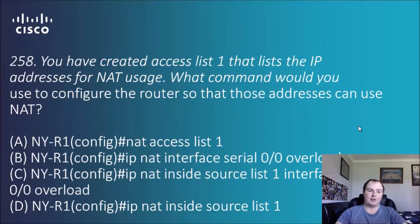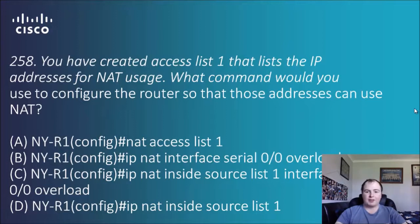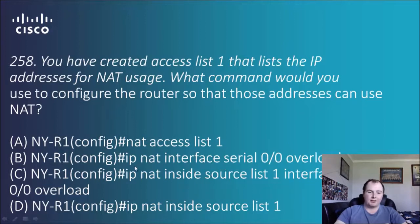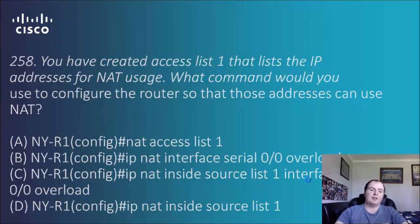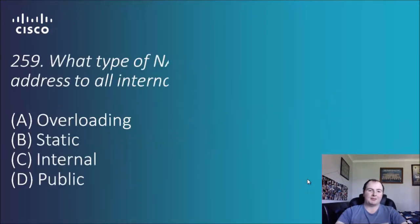Question 258: you have created access list 1 that lists the IP addresses for NAT usage. What command would you use to configure the router so those addresses can use NAT? We're in global config mode. Options include 'IP NAT inside source list 1 interface serial 0/0 overload' and others. Option A is not descriptive enough with interfaces. Option C — 'IP NAT inside source list 1 interface serial 0/0 overload' — is the answer as it specifies everything the question asks.